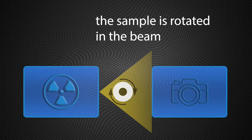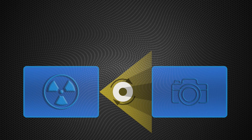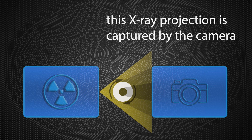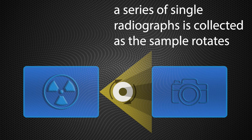The sample is rotated in the beam. The sample absorbs X-rays, and this X-ray projection is captured by the camera. A series of single radiographs is collected as the sample rotates.